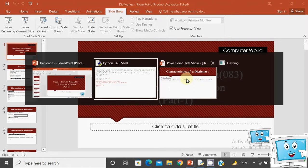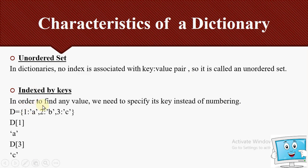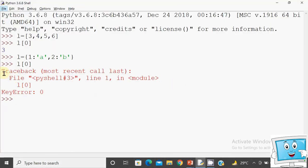The next characteristic is that dictionaries are indexed by keys. To find any value, we specify its key instead of a position number. For example, dictionary D has elements 1:A, 2:B, 3:C. Writing D[1] gives output A, and D[3] gives output C. Similarly, D[1] gives A and D[2] gives B. This is how you access values using keys.